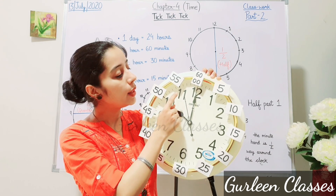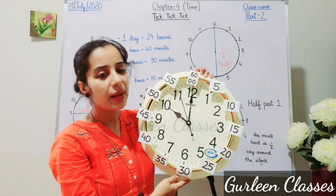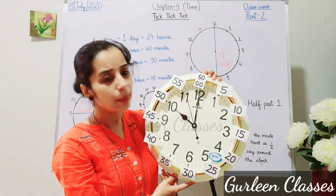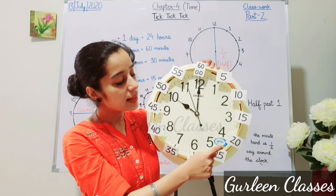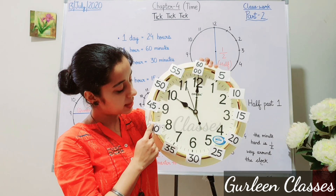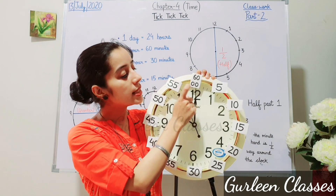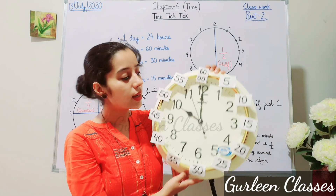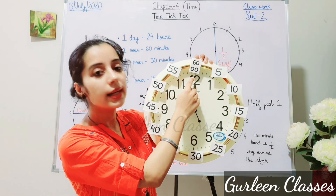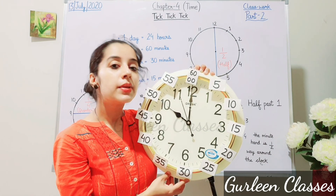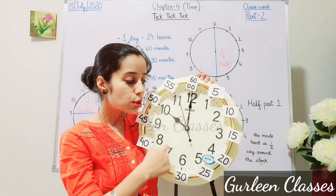When the hour hand moves from one number to another, we say an hour has passed. The numbers on the clock represent the table of five: 5, 10, 15, 20, 25, 30, 35, 40, 45, 50, 55, and 60 minutes. One hour is equal to 60 minutes. Now, can you tell me the time? The hour hand is at 10 and the minute hand is at 12, so the time is 10 o'clock. Whenever the minute hand is at 12, the hour hand tells you the hour.